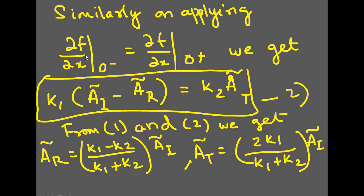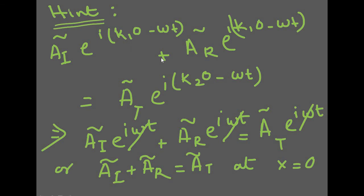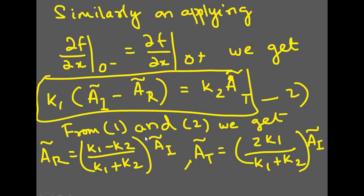The second boundary condition is that the derivative of the wave function is continuous, approaching from left and right both giving the same result at 0-minus and 0-plus. Taking the derivative with respect to x, we get k1 from the incident and reflected wave terms and k2 from the transmitted wave term. This gives k1*(A_i minus A_r) equal to k2*A_t.